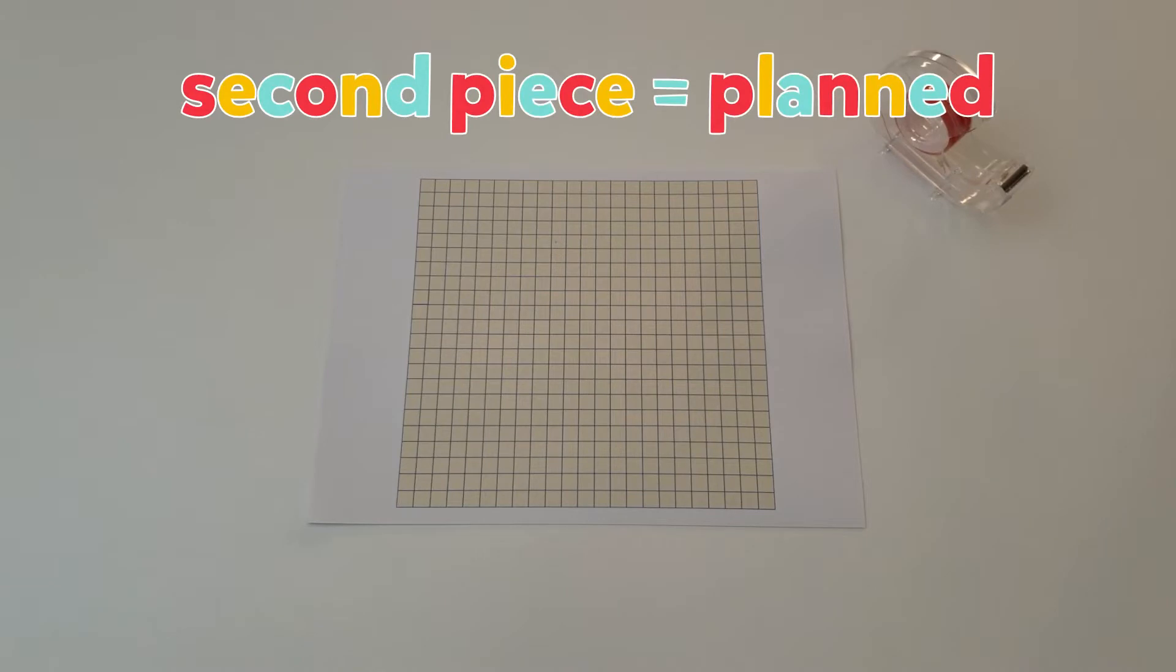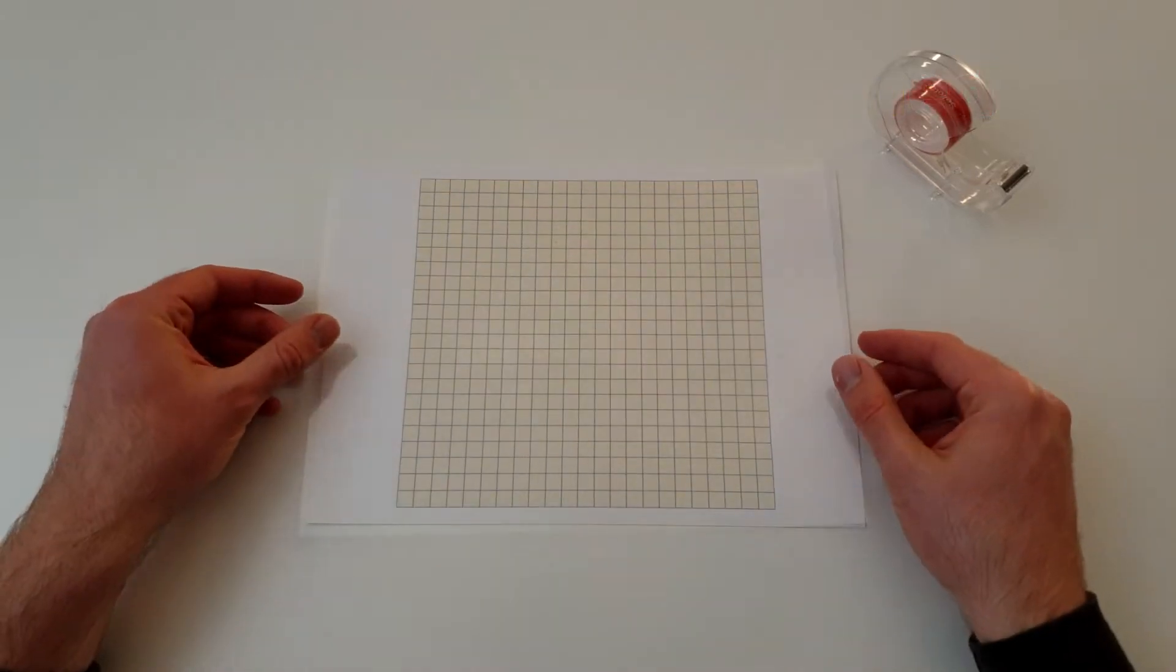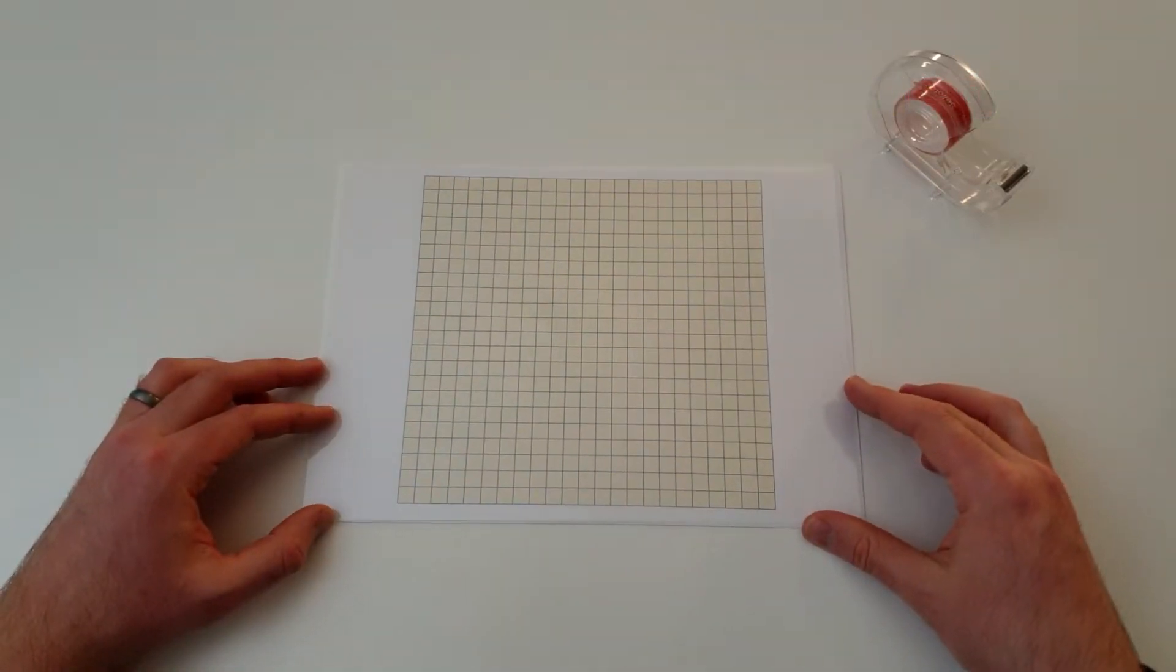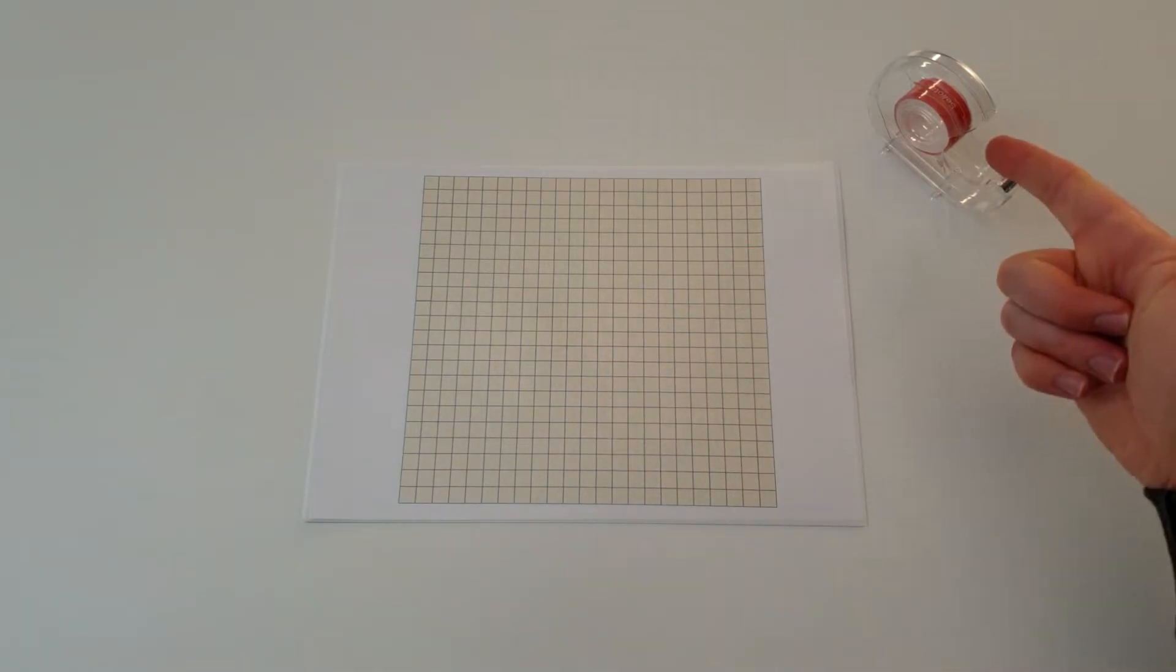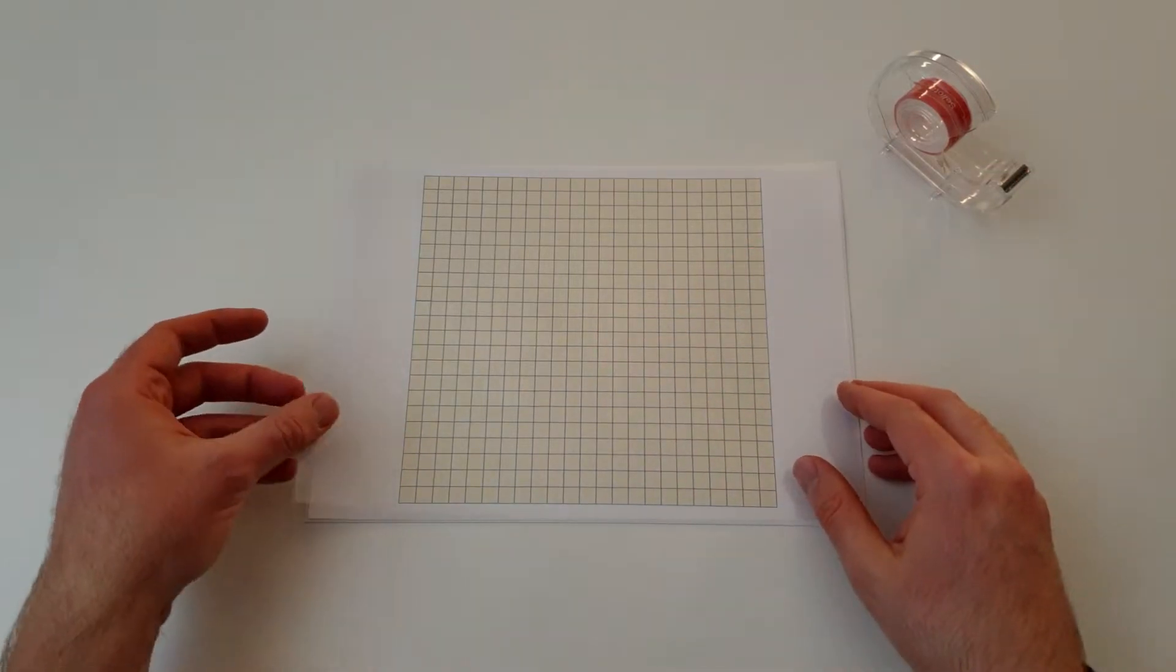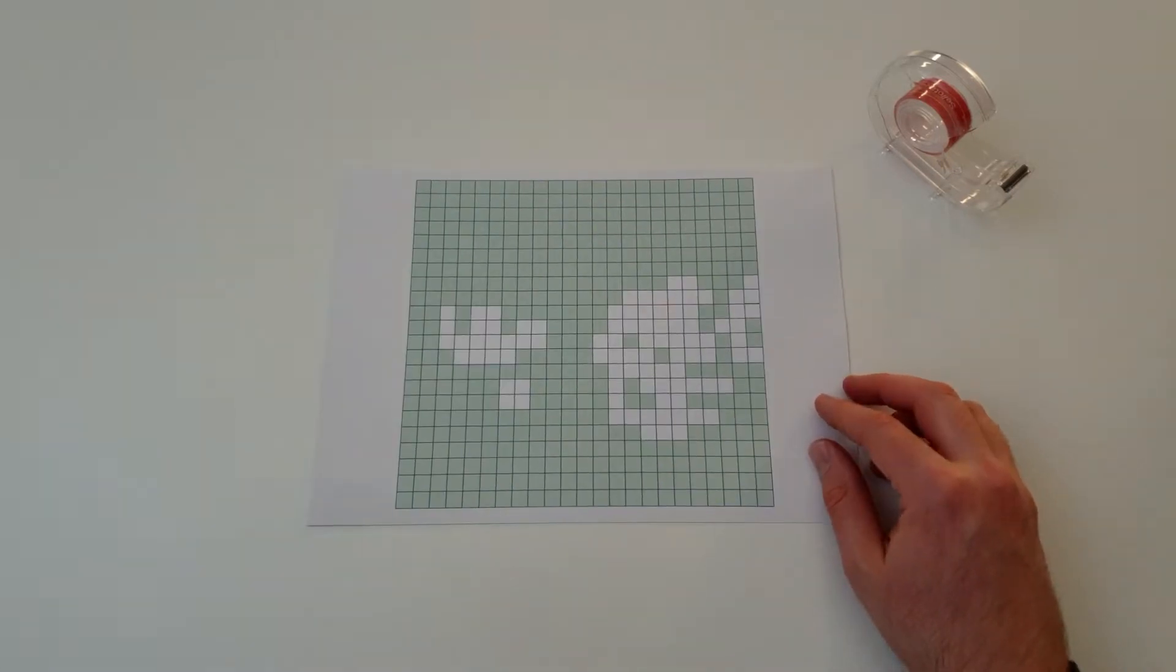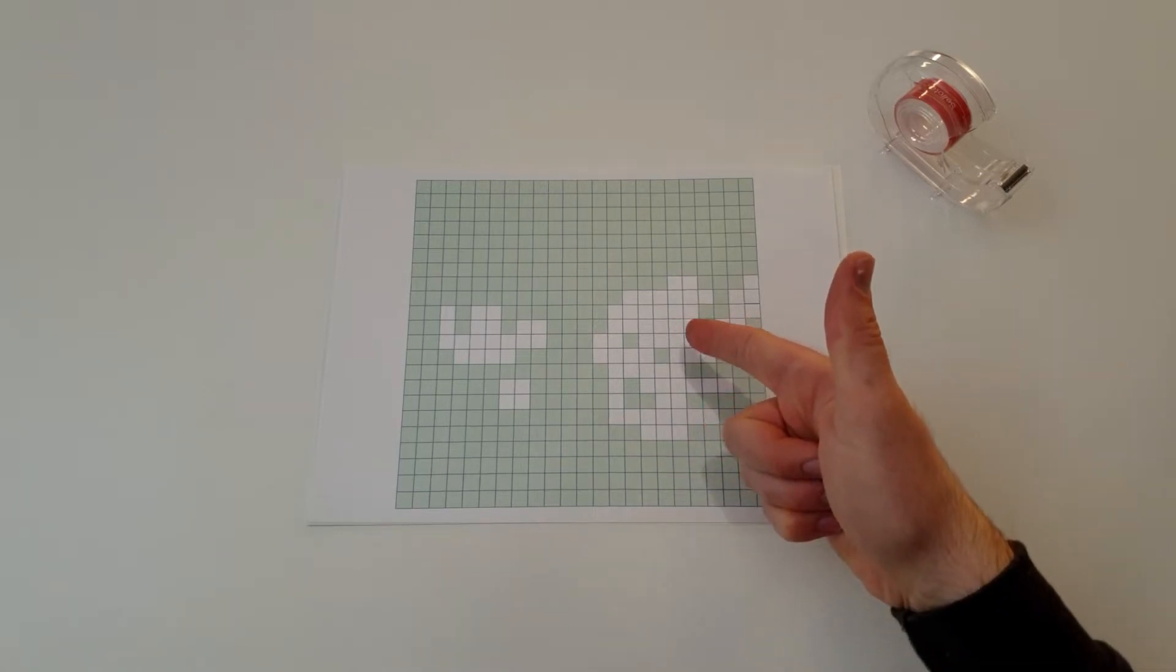This next piece is going to be a bit more planned. I'm going to place the glass on top of this grid and everywhere there's a colored square, I'm going to add a layer of tape. This will make all of these squares yellow. I'm then going to add a second layer of tape everywhere there's a green square. This will make all of these squares green and leave all the other squares yellow.